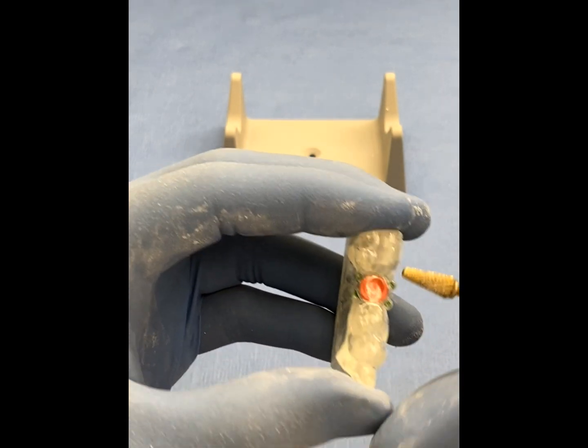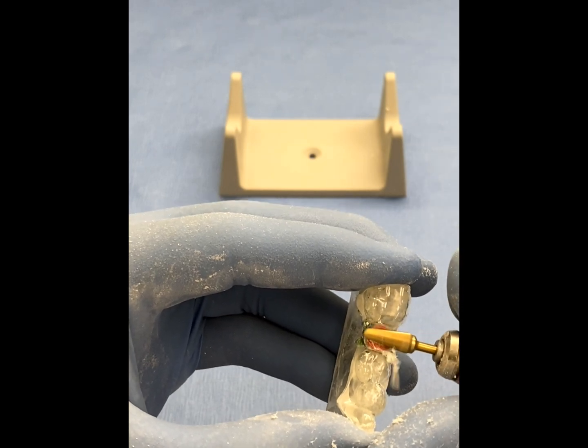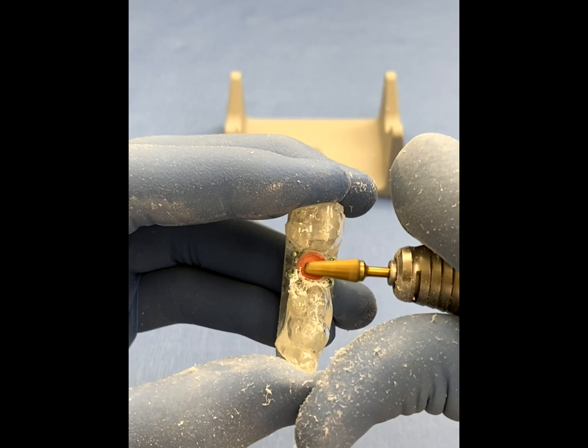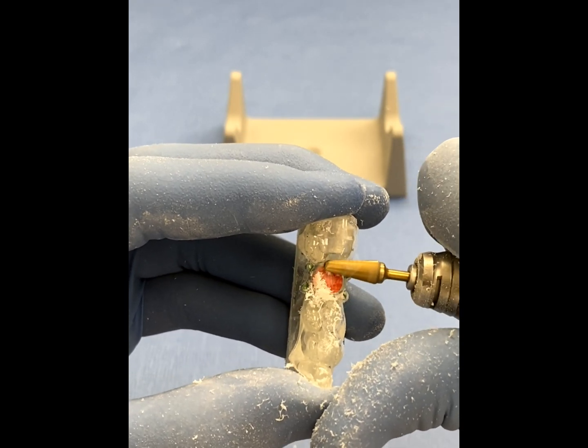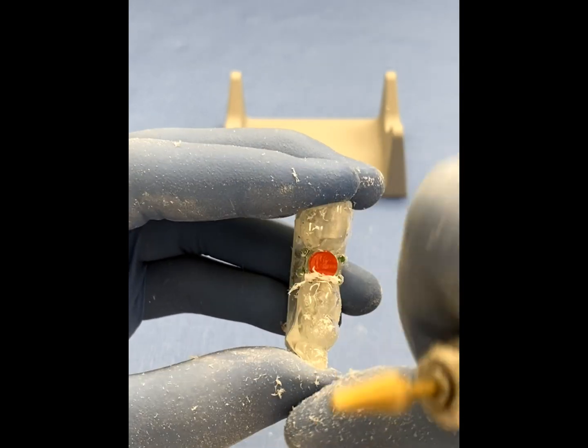Now, by using a fluted or carbide lab burr, remove the excess plastic material that covers the protection cap. The protection cap is a single use item, so much of the protection cap will be consumed during this process. Once completed, there should be no plastic covering the protection cap.